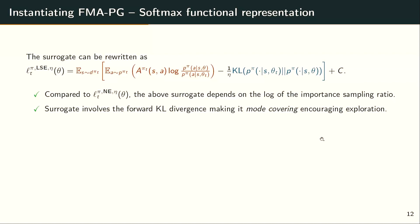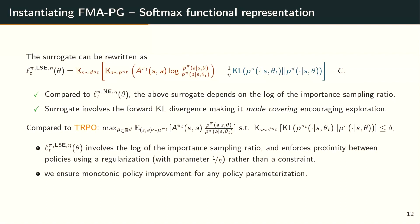Compared to TRPO, which uses an importance sampling ratio directly and enforces a constraint to limit policy movement, our approach uses the log of the ratio and achieves the same effect through regularization. Crucially, we know how to set eta principled, whereas TRPO's delta is a tunable hyperparameter. We can also ensure monotonic policy improvements regardless of policy parameterization, whereas the original TRPO paper only has guarantees in the tabular setting.